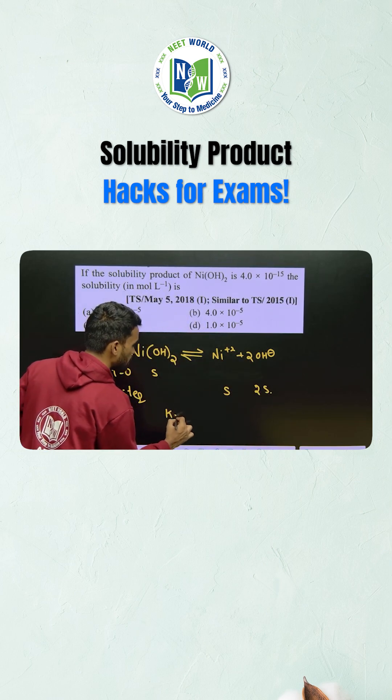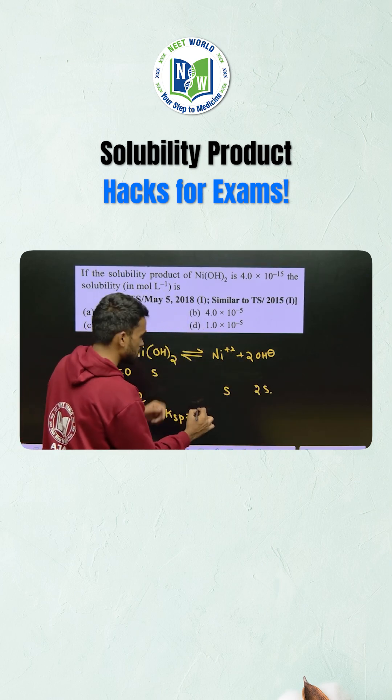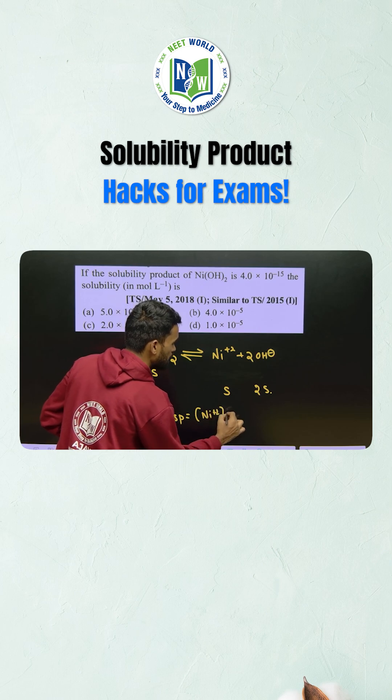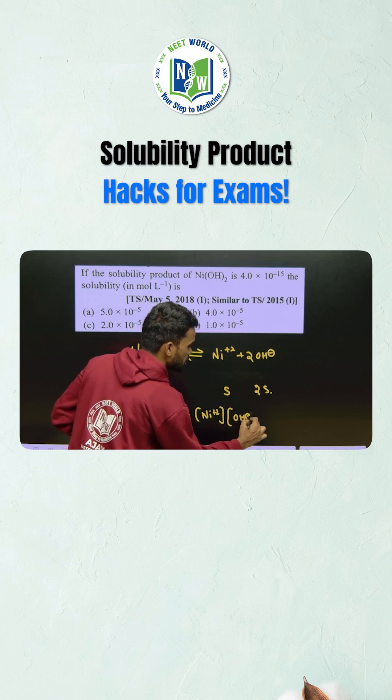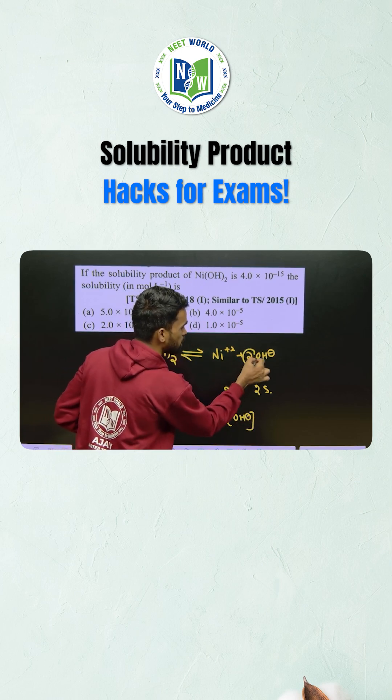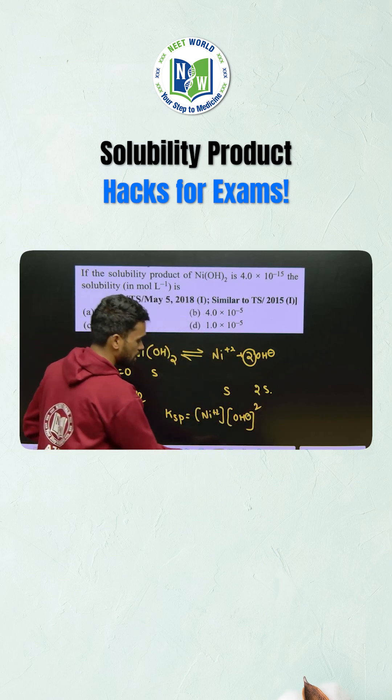Now, solubility product will be written as concentration of Ni plus 2 multiplied with concentration of OH minus and whatever the stoichiometric coefficient here we have take it as a power.